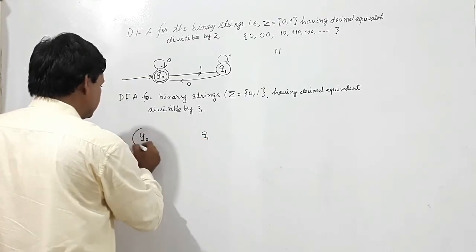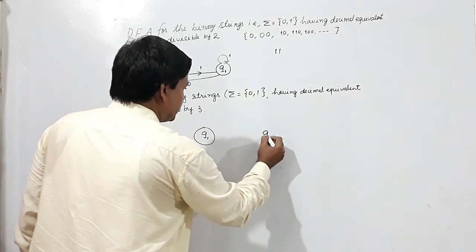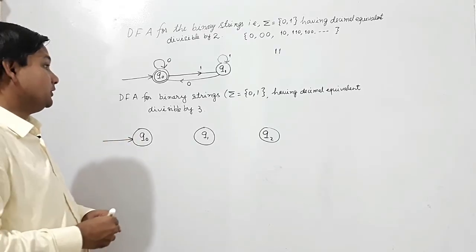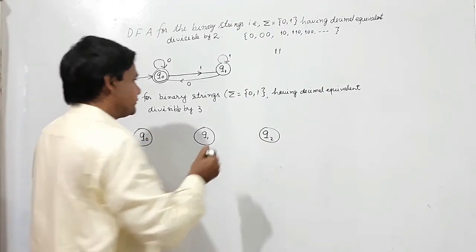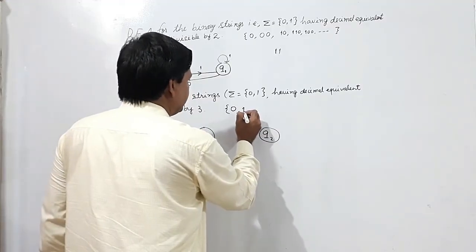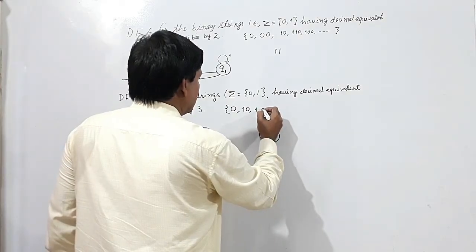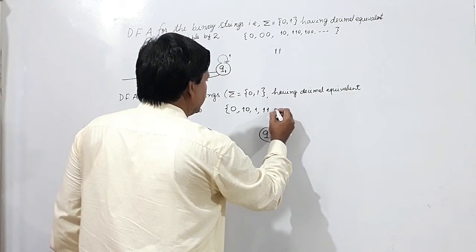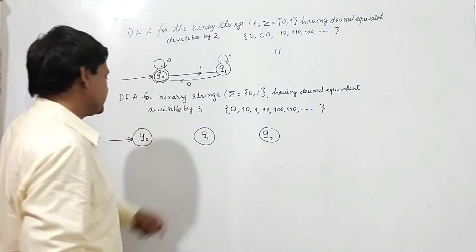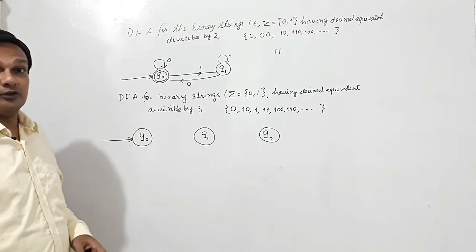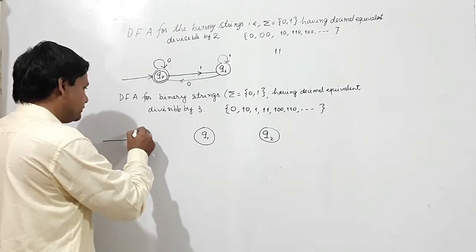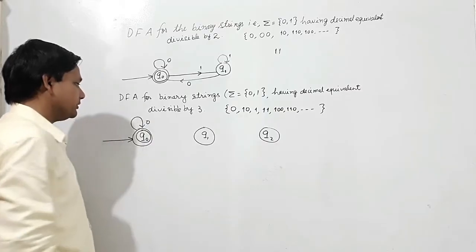The three states are Q0, Q1, and Q2, where Q0 is the initial state. For input 0 at Q0: the string '0' has decimal equivalent 0, which is divisible by 3 with remainder 0, so the transition stays at Q0 — and Q0 is also the final state. For input 1 at Q0: the string '1' has decimal equivalent 1; dividing 1 by 3 gives remainder 1, so the transition goes from Q0 to Q1.